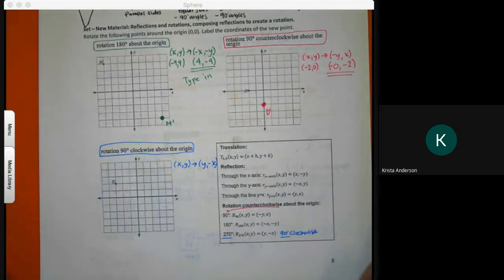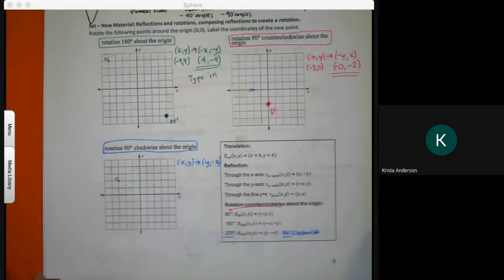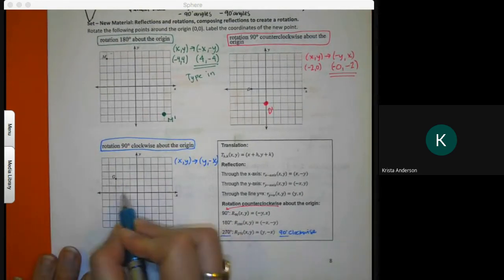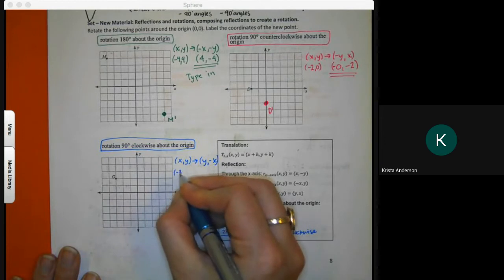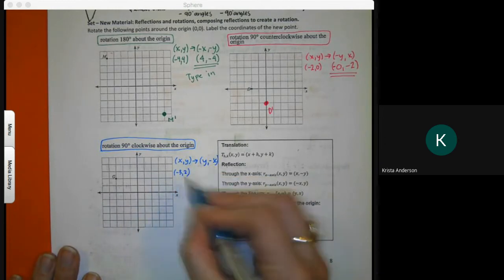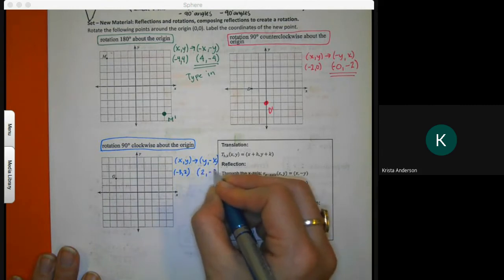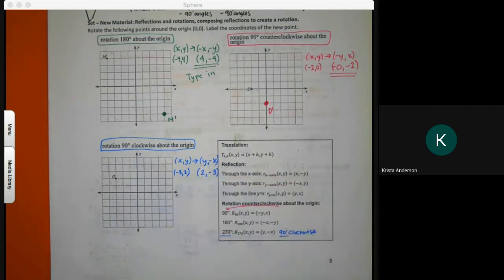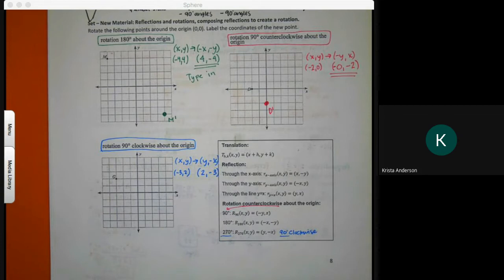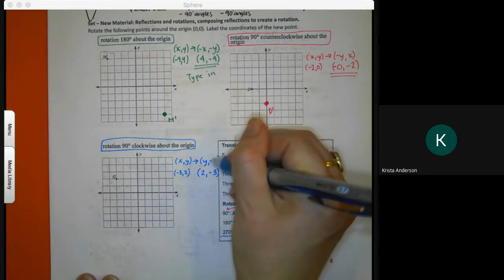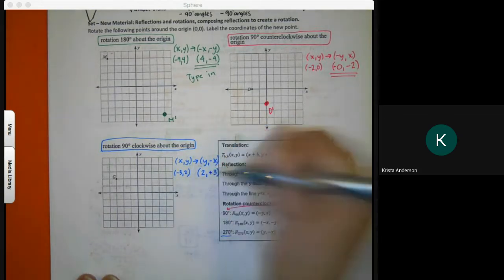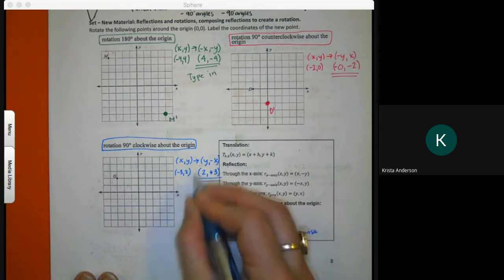I look for my original point - negative 3 up to 2. I'm going to switch my numbers, and then which one sign do I change? The three. The three will switch to positive. This is what I would type in for my answer.